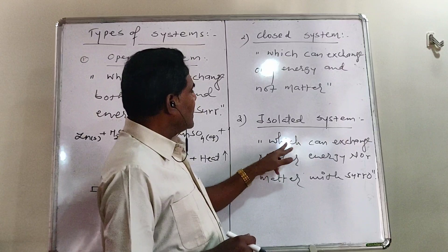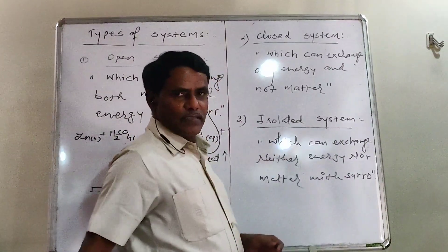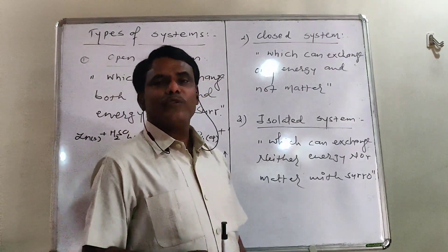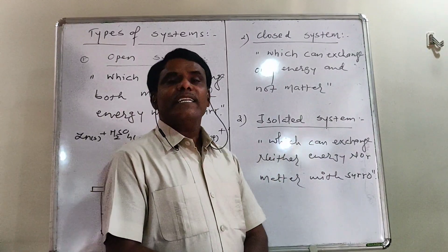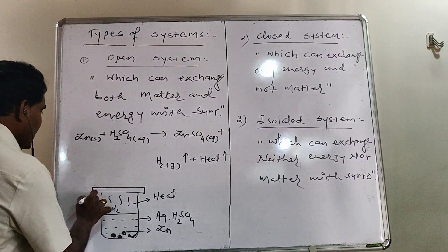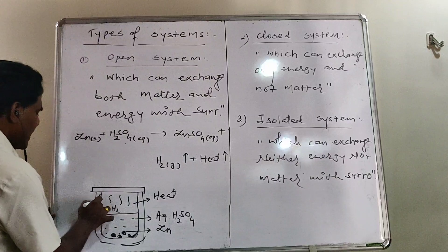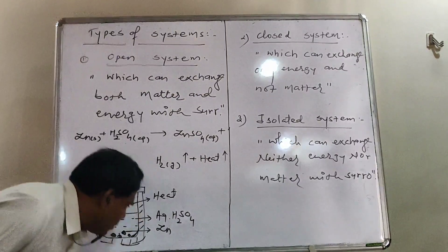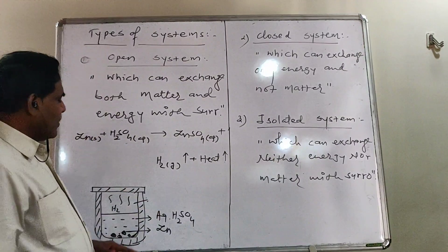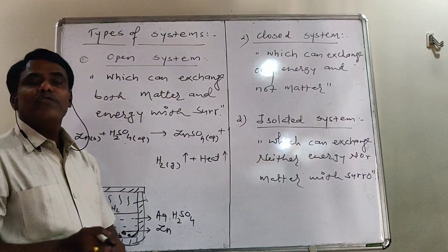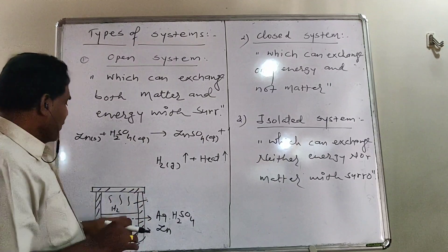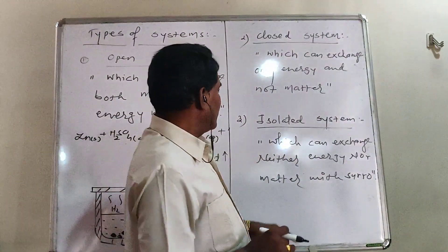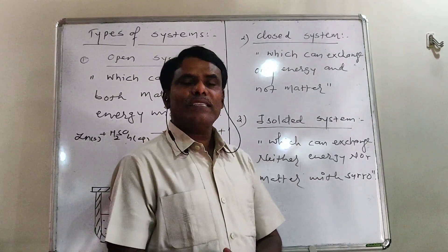Third: Isolated system. It is such a system which can exchange neither energy nor matter with the surrounding. If this reaction is carried out in a thermally insulated vessel (like a thermos flask), then neither exchange of hydrogen gas nor energy occurs. Such a system is called an isolated system.